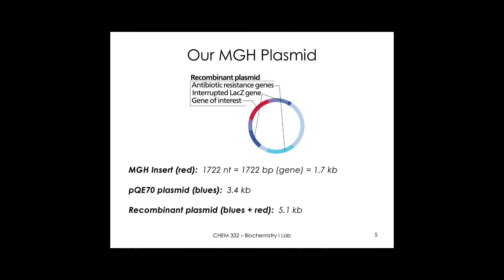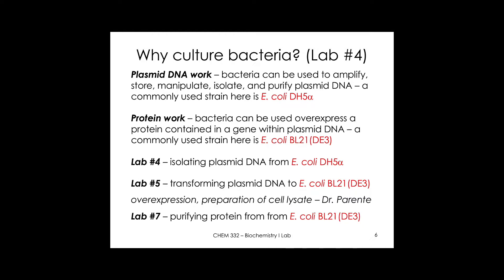Our MGH plasmid has an ampicillin resistance gene, and our MGH gene of interest — shown in red — is predicted to be about 1.7 kilobases. We don't actually have a lac Z gene in our plasmid, but it's worth understanding: if the lac Z gene were intact, it would produce a functional LacZ protein. Inserting a gene into the multi-cloning site disrupts it, which is useful for plasmid cloning tricks, though not specifically for our lab.